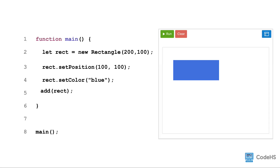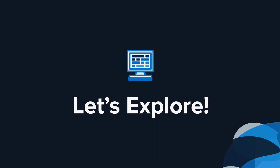Lastly, to add the blue rectangle to the canvas, we call the add function and pass the variable rec between the parentheses. Let's go explore JavaScript graphics some more.